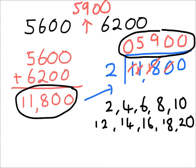Using the same two steps — let's recap. Firstly we added the two numbers; we found the sum of the two numbers. That gives us eleven thousand eight hundred. We then halved that answer — we halved the sum of the two numbers — and half of eleven thousand eight hundred gave us five thousand nine hundred.